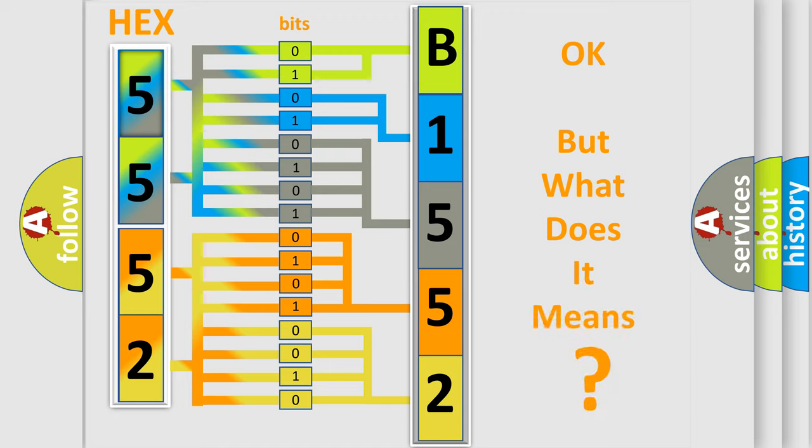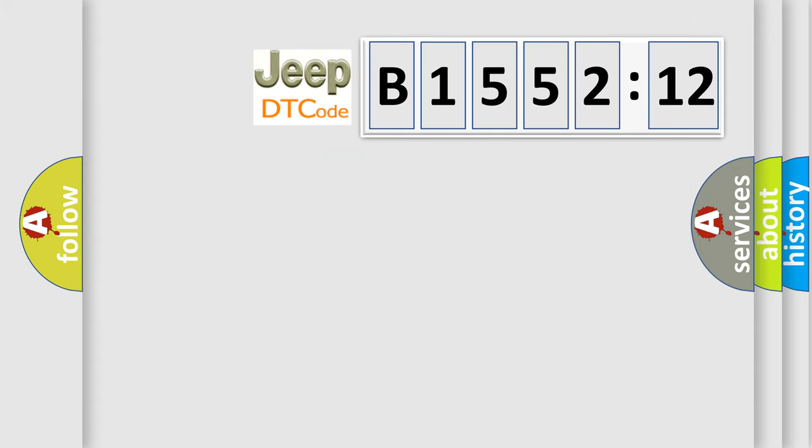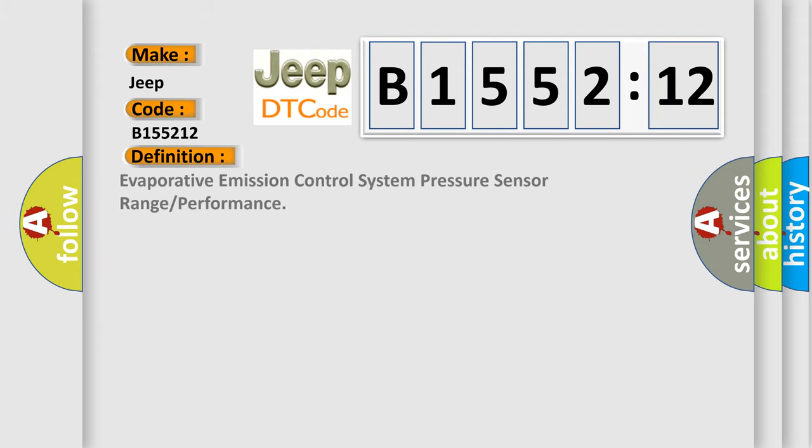We now know how the diagnostic tool translates the received information into a more comprehensible format. The number itself does not make sense if we cannot assign information about what it actually expresses. So what does the diagnostic trouble code B155212 interpret specifically for Jeep car manufacturers? The basic definition is evaporative emission control system pressure sensor range or performance.